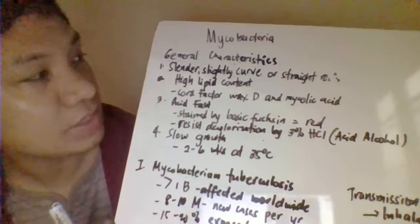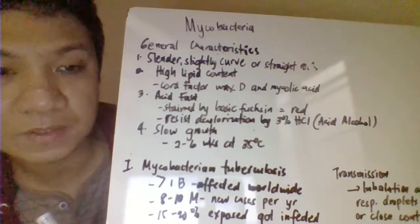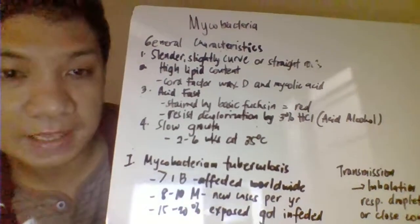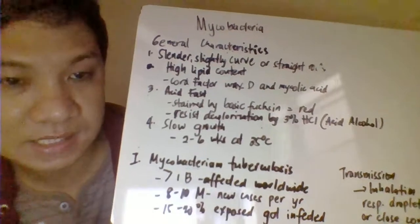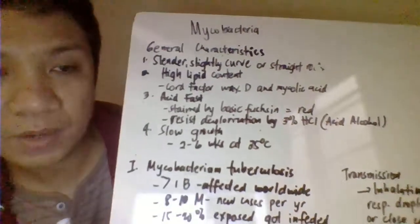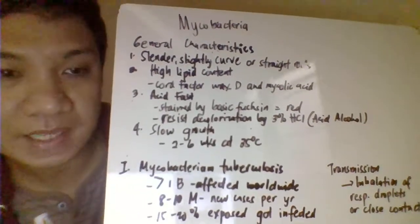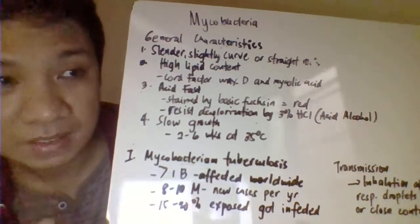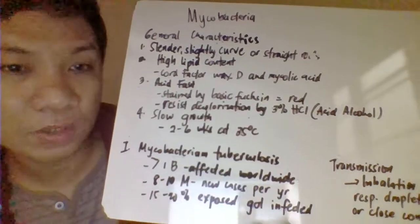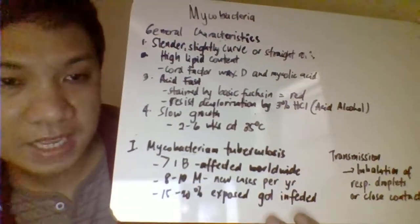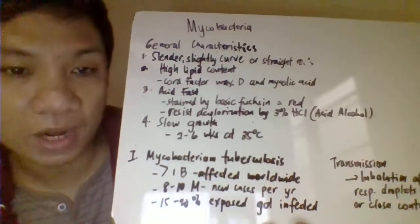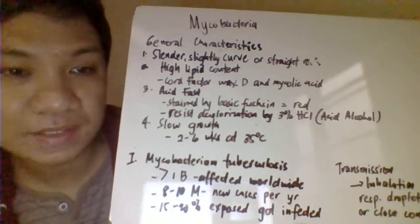Mycobacteria have general characteristics: they appear as bacilli, slender, slightly curved or straight rods — elongated. They have a very thick cell wall made up primarily of lipid content, called the cord wax factor D, and long chains of mycolic acid.